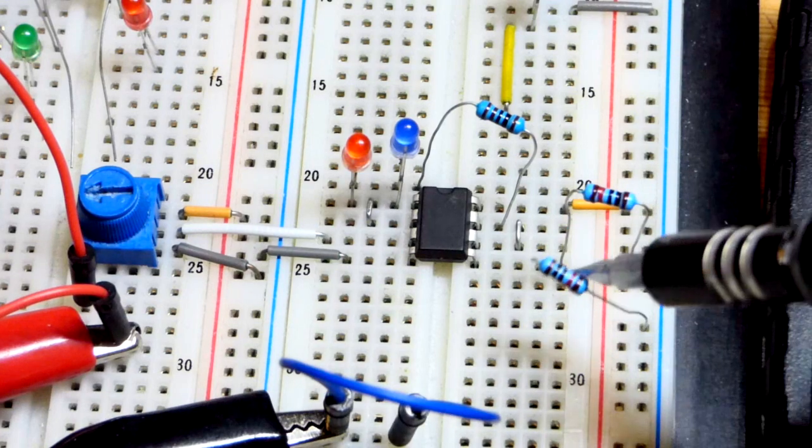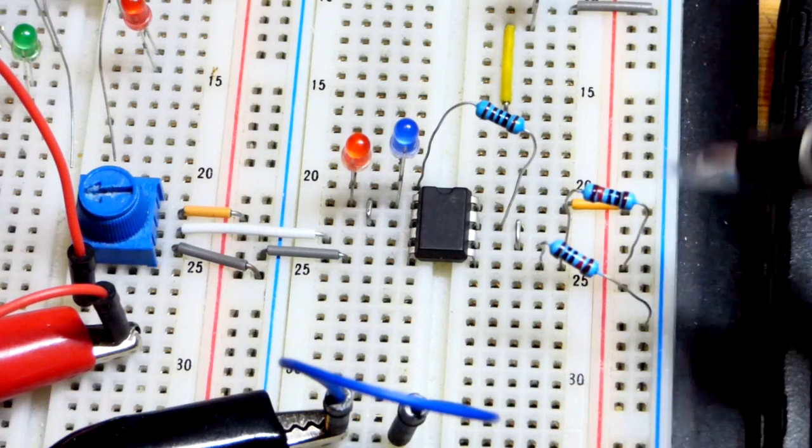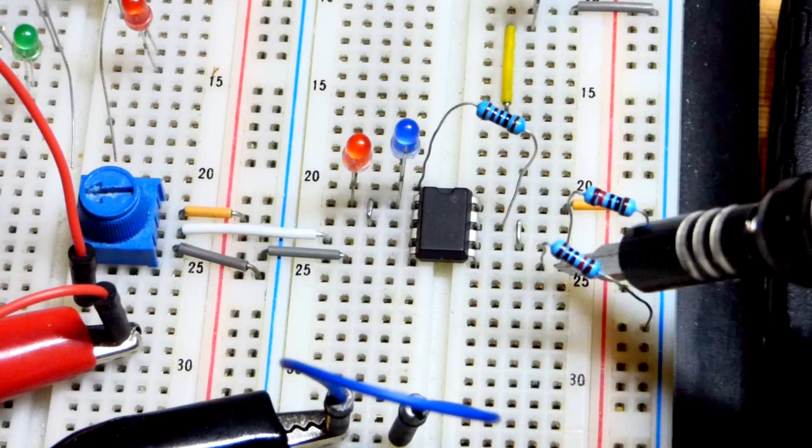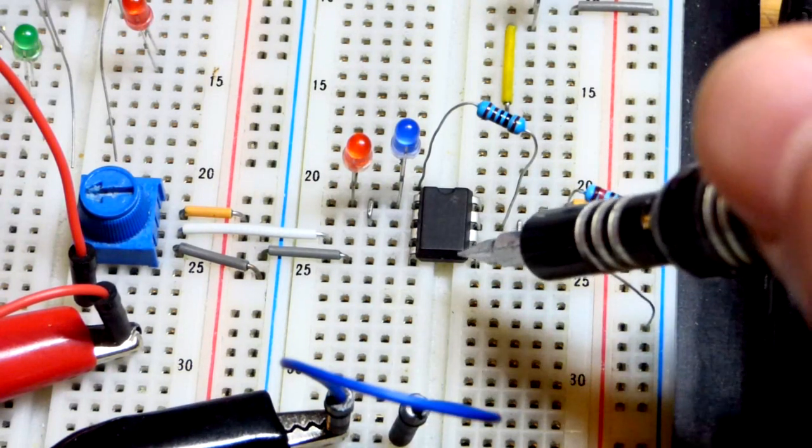And so here we are. Here's our virtual ground. We got that one to the negative supply, that one to the positive supply. They're both 10 kilo-ohms, so we got a halfway point there as far as the power supply is concerned.